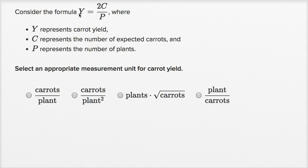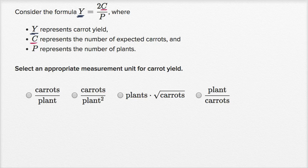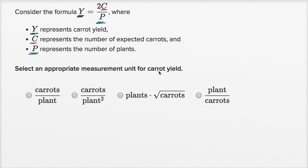We're told to consider the formula y equals two c over p, where y represents the carat yield, C represents the number of expected carats, and P represents the number of plants. Select an appropriate measurement unit for carat yield.